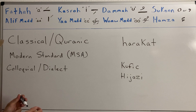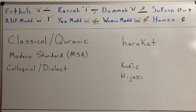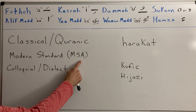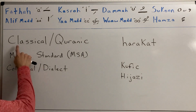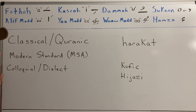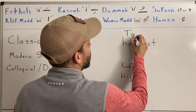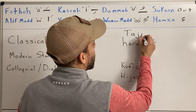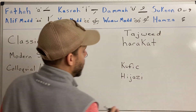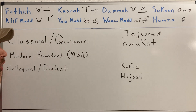The first type is classical, also known as Quranic Arabic. The second is Modern Standard Arabic, or MSA. The third is colloquial or dialect Arabic. Classical or Quranic Arabic, as it sounds, is the Arabic as it is written and spoken in the Quran. You're going to use certain rules called tajweed — T-A-J-W-E-E-D — though we won't go into that in depth here.